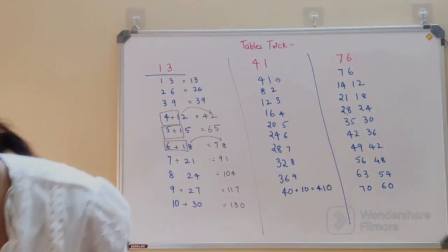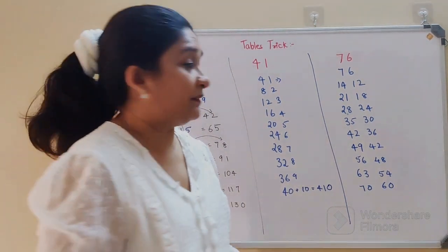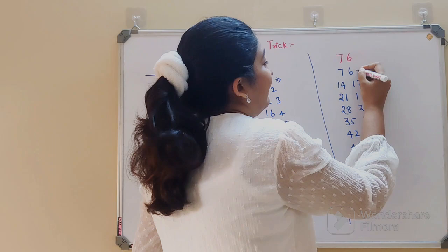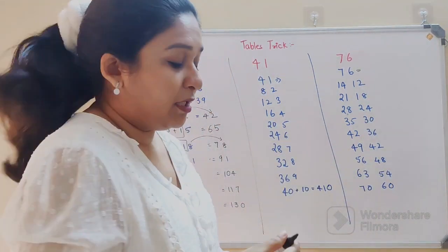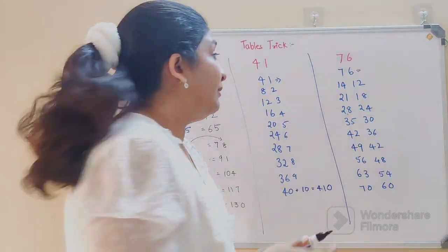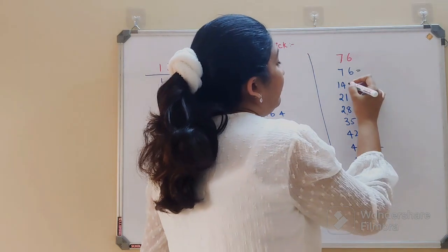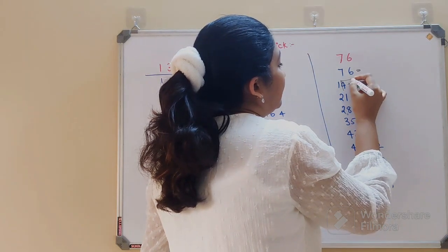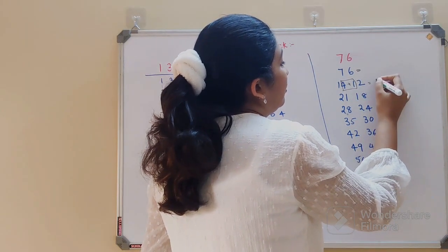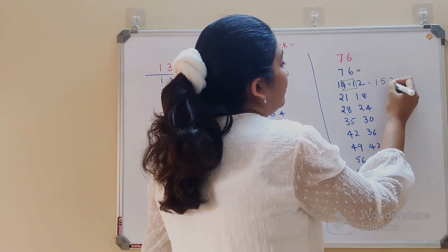So now in order to write down your final answer, this is going to remain as it is because this has just one single digit in the units place. Now for this one, what we will do is just add these two. So here you will have 1, 5, 2.